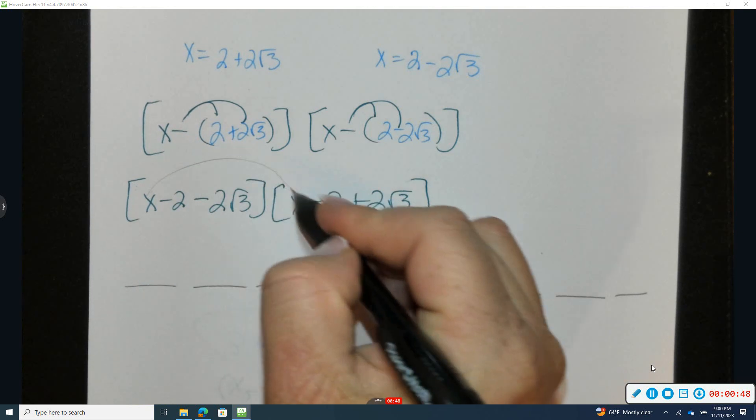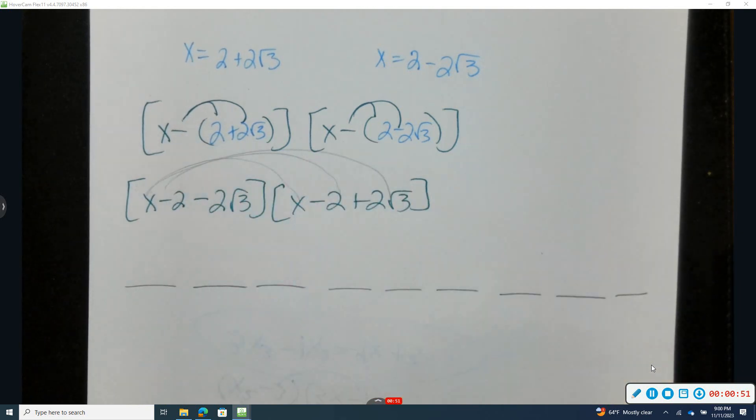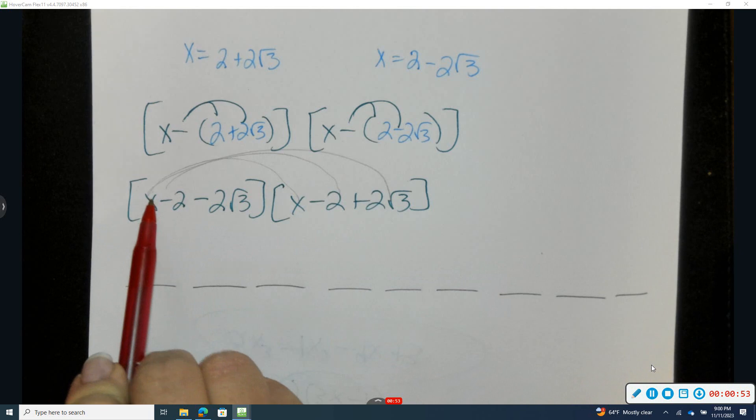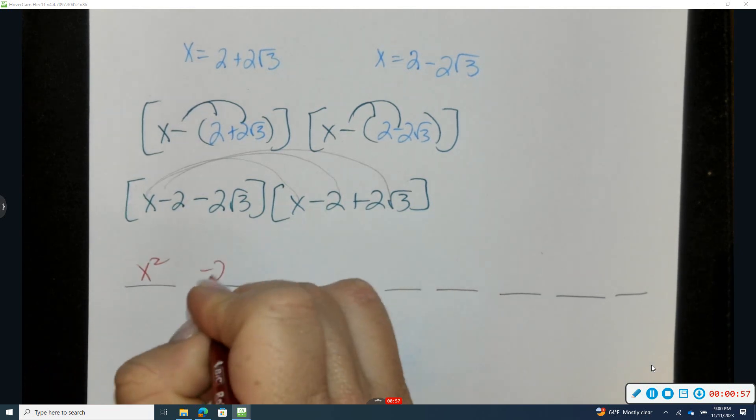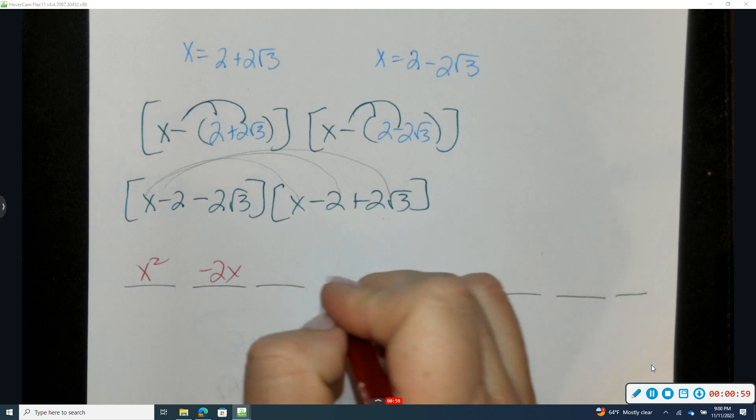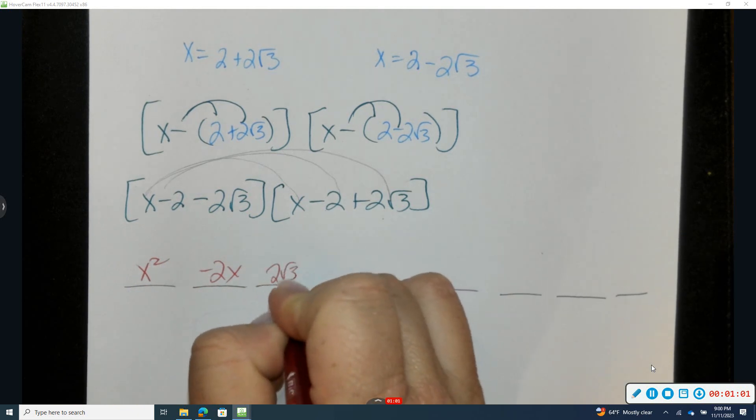So here will be the first, so it makes like this rainbow shape. x times x is x squared. x times negative 2 is negative 2x. And x times this quantity is 2 radical 3x.